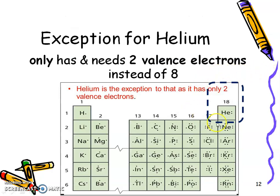And he also talked about the exception for helium, how all of group 18 has eight valence electrons, because they're stable, but helium only has two.